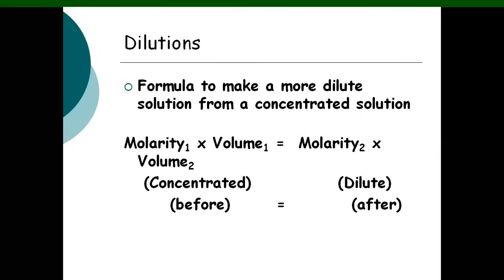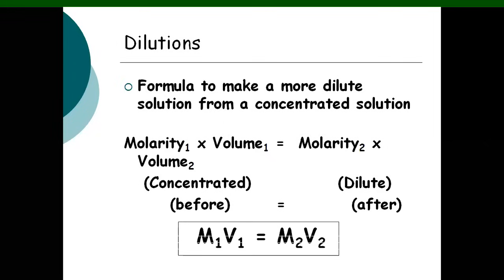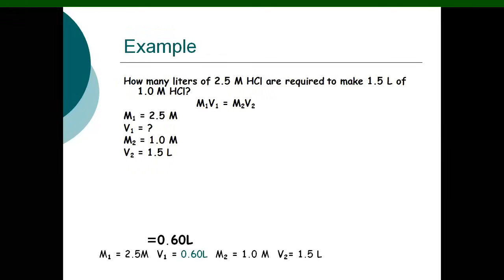Dilution: the formula to make a more dilute solution from a concentrated solution. If it is concentrated and you need to make it dilute, the formula is: M1 × V1 = M2 × V2, where concentrated before equals dilute after. For example, how many liters of 2.5 M HCl are required to make 1.5 liters of 1 M HCl? You have a 2.5 molar HCl solution and you need to make a 1 molar HCl solution.